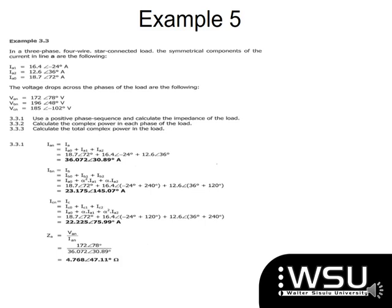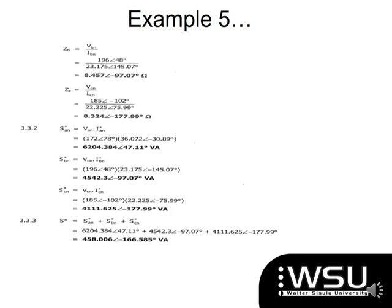Then we go to my ZA, which is my impedance across my A phase, which is simply my VAN divided by my IAN. Will be the same for my ZB and my ZC.